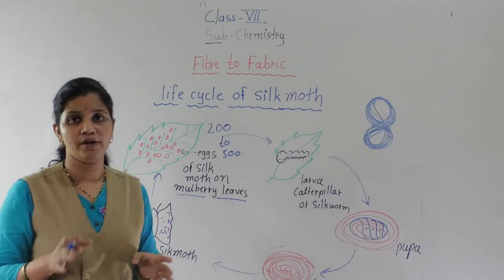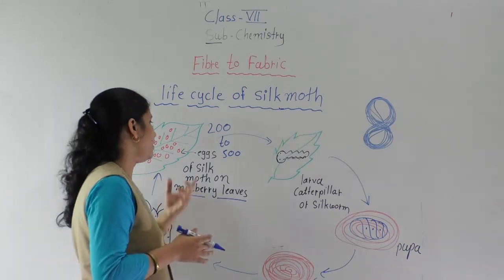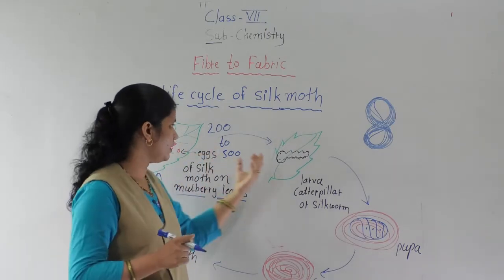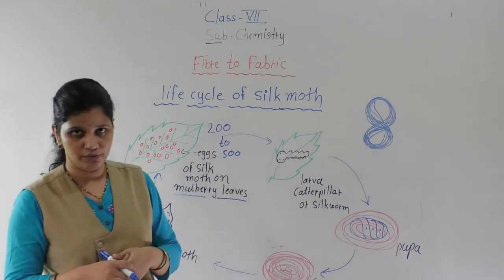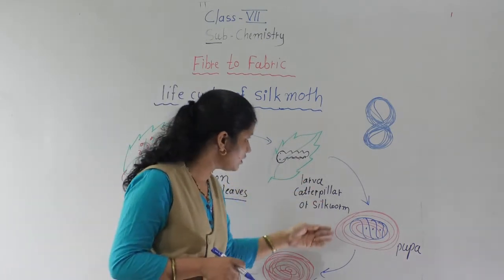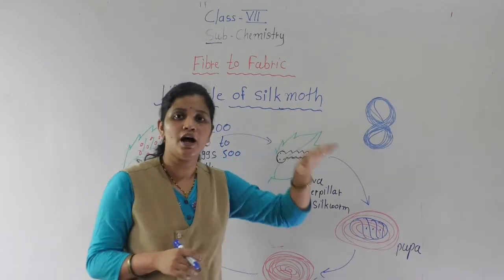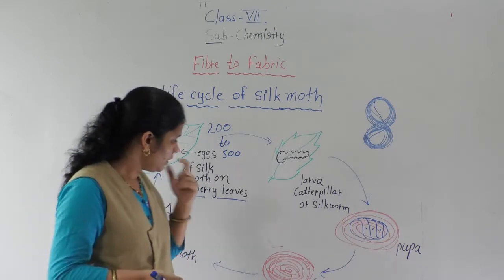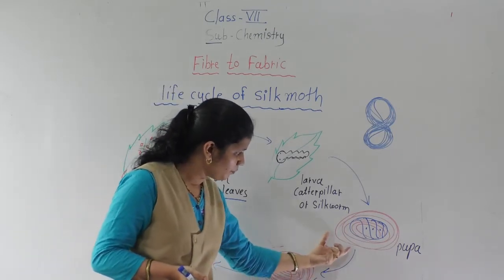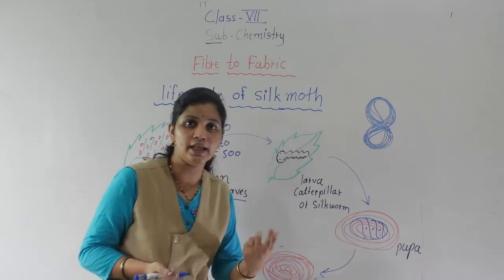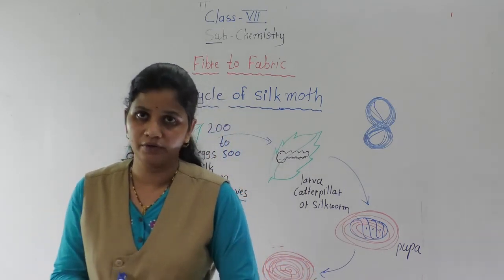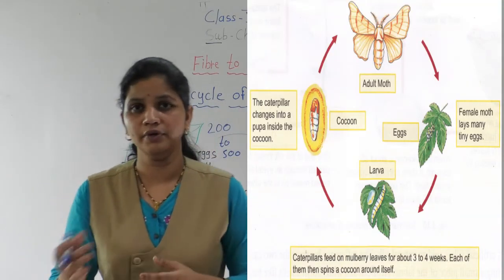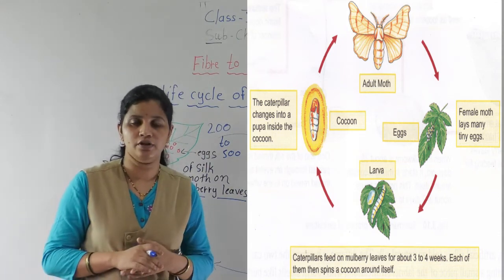At one time, the female can lay 200 to 500 eggs, but not all of them become caterpillars. This is the life cycle of the silk moth and how this process continuously goes on. The outer covering around the pupa — that is only the silk fiber. That is known as the silk fiber. How to get the silk fiber from it, we will learn in the next lecture. Thank you.